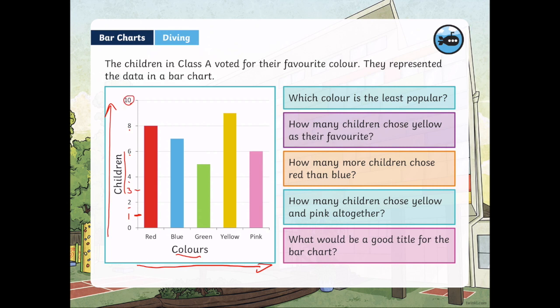Bar charts are used to represent data and they can help give us answers to questions we might have. Let's look at the first question: which color is the least popular? Least means the fewest, so we're asking about the color that the smallest amount of children voted for. Red is at 8, blue is at 7, green is at 5, yellow is at 9, pink is at 6. So we just look for the shortest bar, which is green. Green is the color that the fewest children chose.